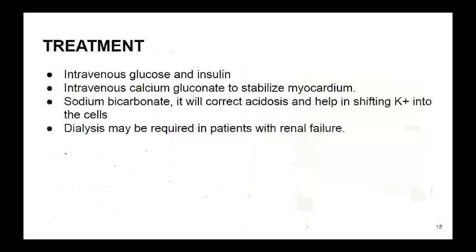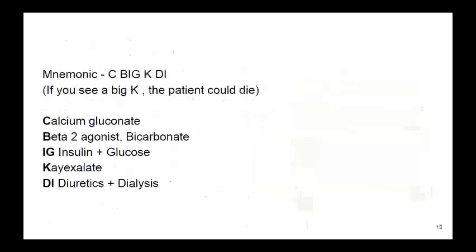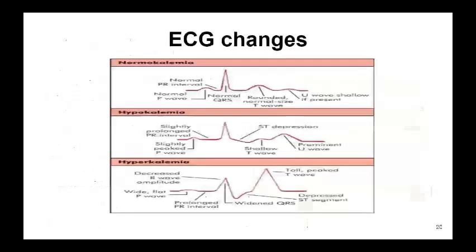Treatment of hyperkalemia includes intravenous glucose and insulin, intravenous calcium gluconate to stabilize the myocardium, sodium bicarbonate to correct acidosis and shift potassium back into the cells, and dialysis in patients with renal failure. The mnemonic for treatment is C BIG K DI: C for calcium gluconate, B for beta-2 agonist and bicarbonate, IG for insulin and glucose, K for K-exalate, DI for diuretics and dialysis.